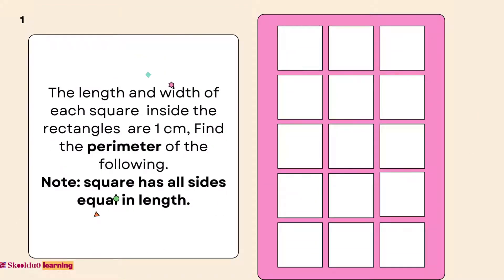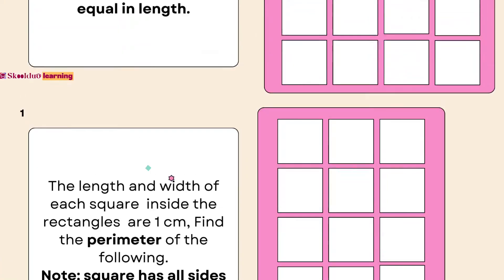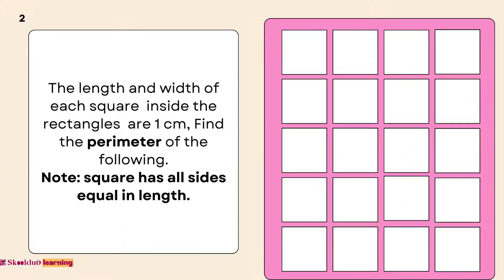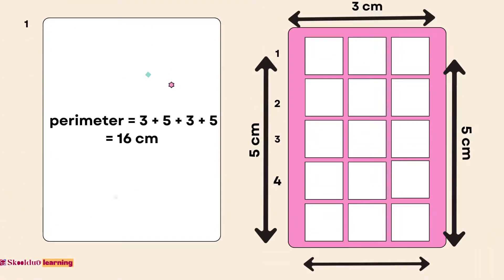Here are some examples. The length and width of each square inside the rectangles are 1 cm. Find the perimeter of the following. Number 1: Perimeter equals 3 plus 5 plus 3 plus 5, which is equal to 16 cm.